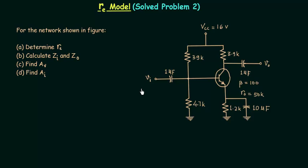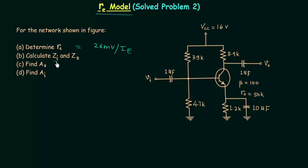In this lecture, we will solve one problem based on analysis of a BJT amplifier circuit with voltage divider bias. We will use the Re model as the equivalent model of the transistor. In this problem, we need to determine resistance Re — the dynamic emitter resistance — and then calculate input impedance, output impedance, voltage gain, and current gain.